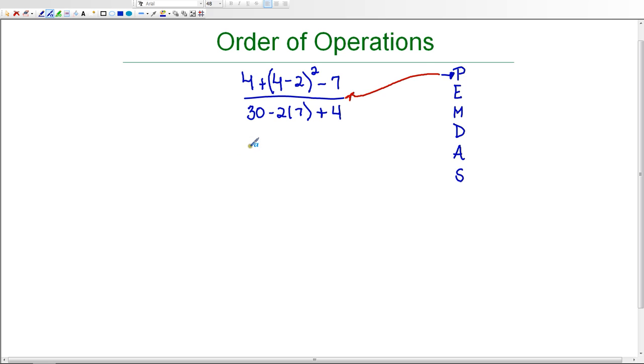So in the numerator I do have a set of parentheses that's 4 minus 2 inside, and 4 minus 2 is 2. I'm going to leave it in parentheses for right now, just the 2.